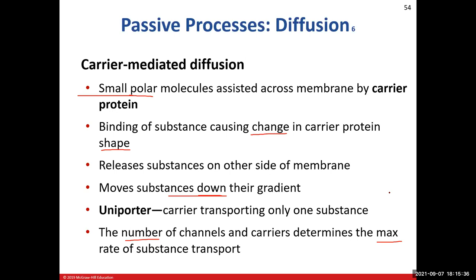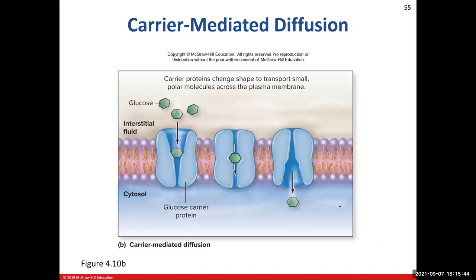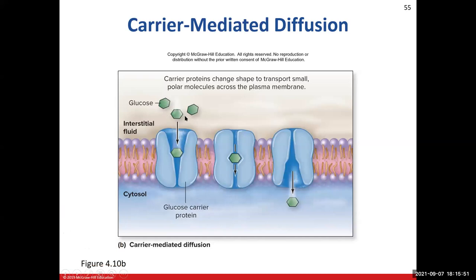We see this maximum capacity with glucose transporters — cells just can't fit any more, especially when trying to decrease blood sugar levels. In diabetics, this limitation can cause glucose to appear in the urine. The diagram here shows carrier-mediated transport: glucose outside the cell binds to the carrier protein, causing it to change shape — from a wedge facing out, to closed, to a wedge facing in — allowing glucose to cross.